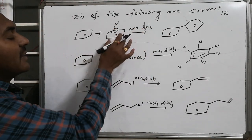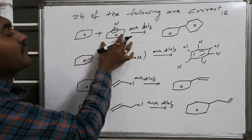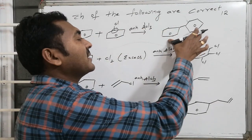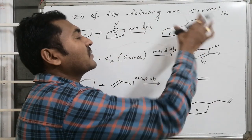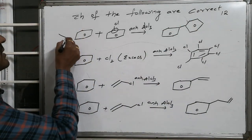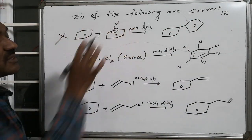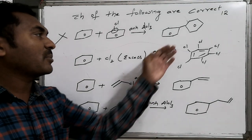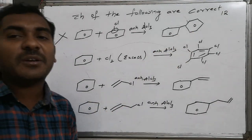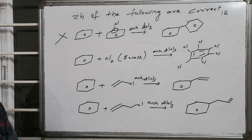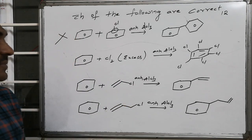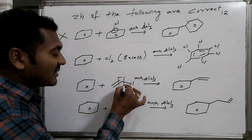Since the carbocation is not generated, benzene cannot attack it, and this does not lead to the formation of diphenyl. Hence cation formation is not possible, and biphenyl formation does not occur.